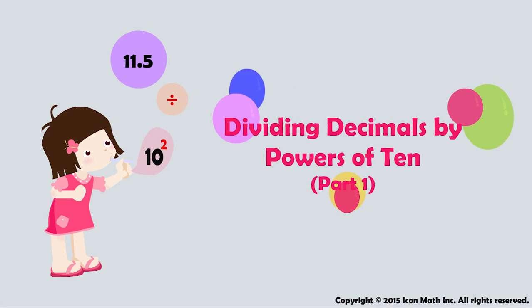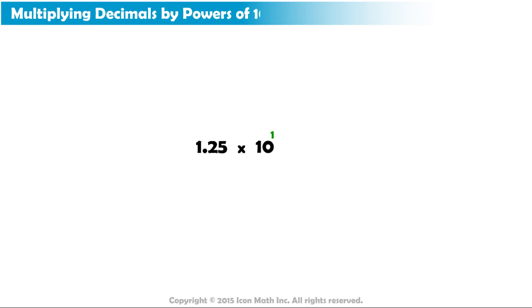Dividing decimals by powers of 10. We learned earlier that to multiply decimal numbers by powers of 10, we move the decimal point to the right as many places as that power. But what if we want to divide decimal numbers by powers of 10?